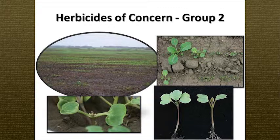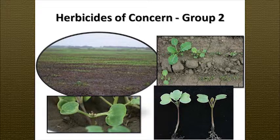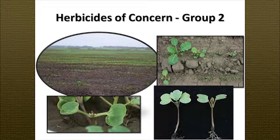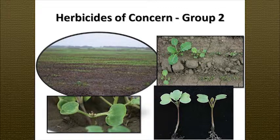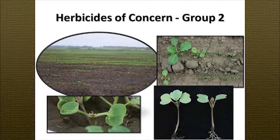In close-up views you can see the growing point is really stunted with tiny leaflets that aren't going anywhere, sometimes with purpling. You can have a healthy plant right next to one showing carryover symptoms—the cotyledons look fine but the new leaf is stunted. This doesn't just jump out and bite you in the field; it takes a little detective work to figure out, but those symptoms can be a real problem if you're trying to get canola started.